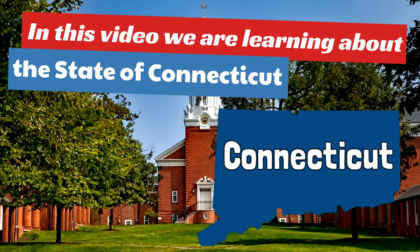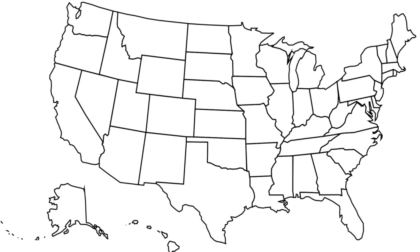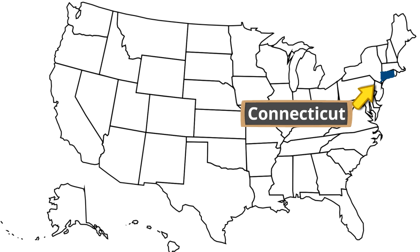The first thing we want to figure out is where is Connecticut? Here is a United States map. Where is the state of Connecticut? Do you already know? The state of Connecticut is up here in the upper right-hand corner of the United States, in the far northeast, in a region of the United States called New England.